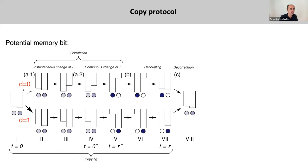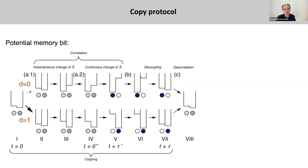Here we have the potential of a memory bit. We bring it into contact with the data bit. If the data bit is zero, the sequence of steps in the top row will be followed; otherwise the steps in the bottom row. A typical protocol consists of first establishing the correlation between the memory bit and the data bit by changing these energy levels. Then we need to decouple the memory bit from the data bit by raising the barrier between the two states. Then at some point there will also be a decorrelation step.